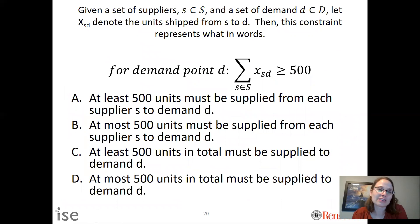My next question for you: given a set of suppliers S and a set of demand D, let Xsd denote the units shipped from s to d. Then what does this constraint represent in words? The correct answer is C. The key thing is that we say at least 500—we need 500 or more. There's a greater than or equal to, so that's at least 500, not at most. And the other thing is in total must be supplied to demand d. Each of these demand points needs to have at least 500 units, but they can come from any supply source. So we sum over s to meet that 500 units.